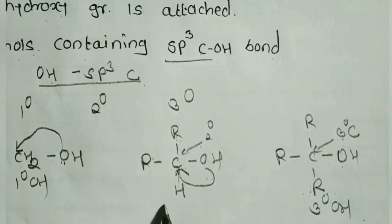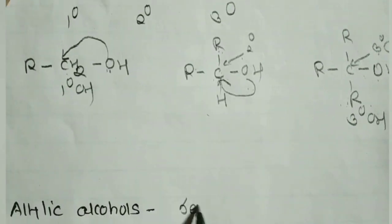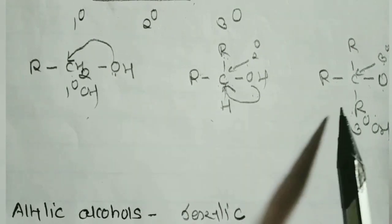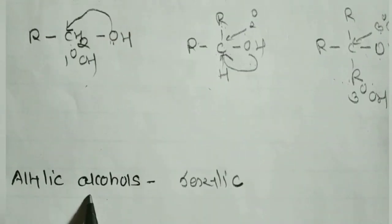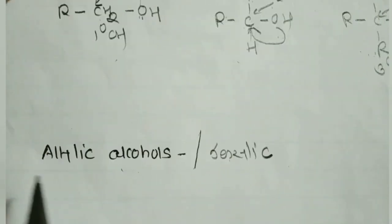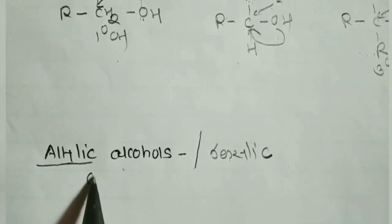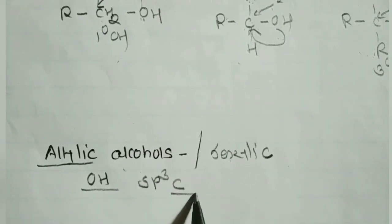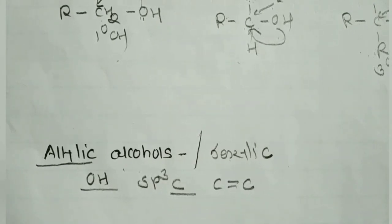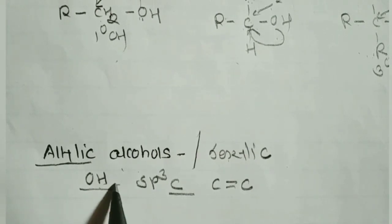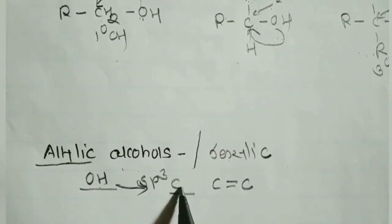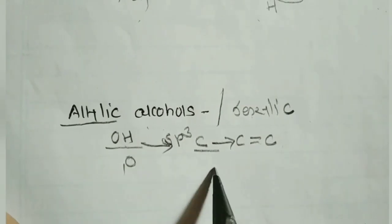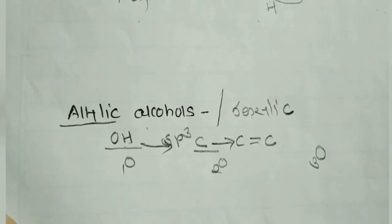These three types of alcohol (primary, secondary, tertiary) can also be either allylic alcohol or benzylic alcohol. Allylic alcohol means the OH group is attached to an SP3 carbon atom, and this SP3 carbon is further attached to a carbon–carbon double bond (C=C). This is also of three types: primary allylic alcohol, secondary allylic alcohol, and tertiary allylic alcohol.